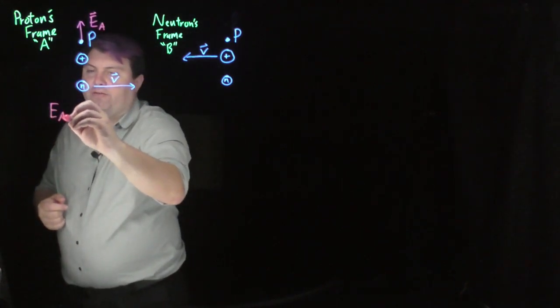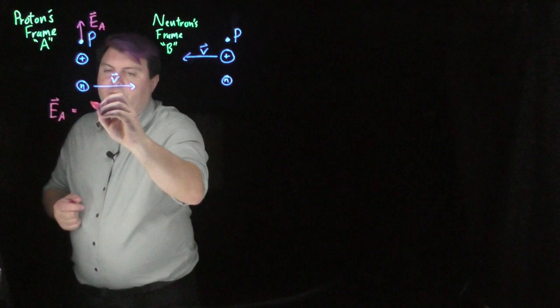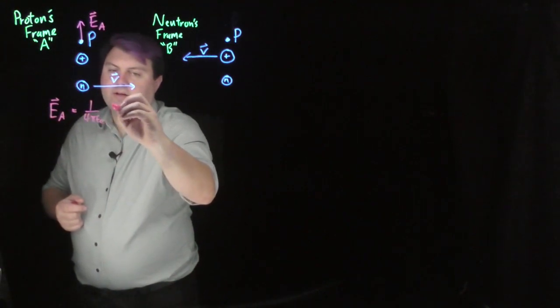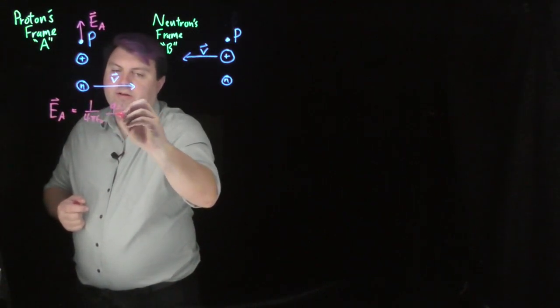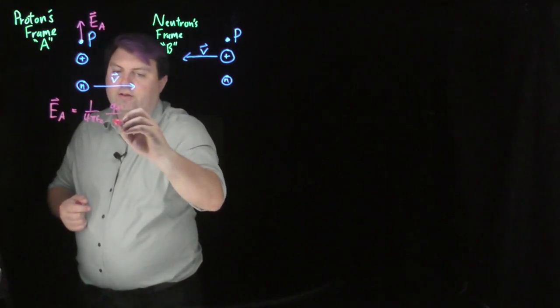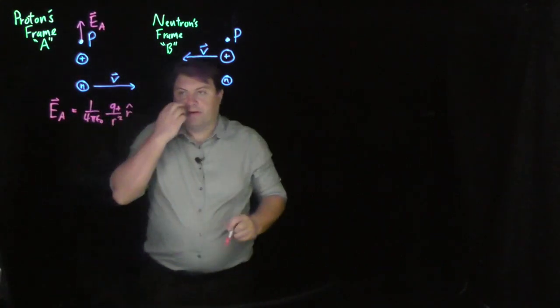in frame A from the proton. So we can calculate the electric field from A is going to be one over four pi epsilon naught, the charge of our proton over the distance squared in the r hat direction.